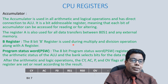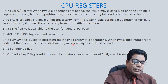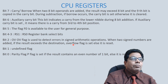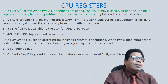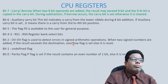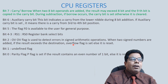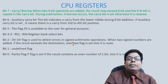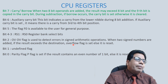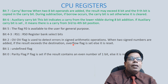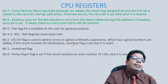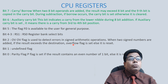Bit 7 is the carry/borrow flag: when two 8-bit operands are added and the result exceeds 8 bits, the ninth bit is copied into the carry flag. During subtraction, if borrow occurs, the carry bit is set; otherwise it is cleared. Bit 6 is the auxiliary carry bit, indicating a carry from the lower nibble during 8-bit addition — if set, there is a carry from the third to fourth bit position.